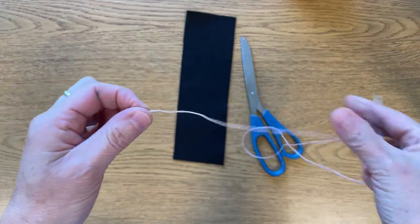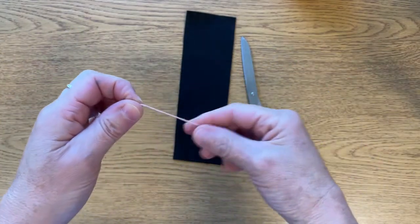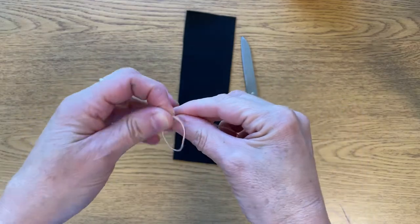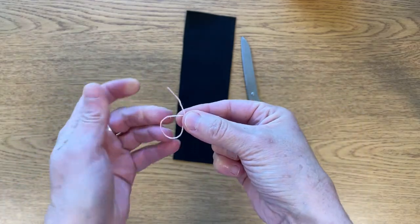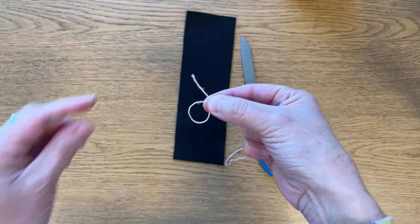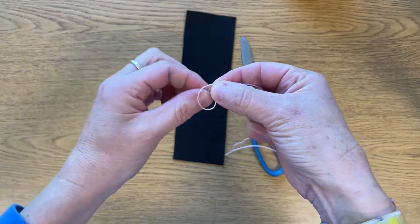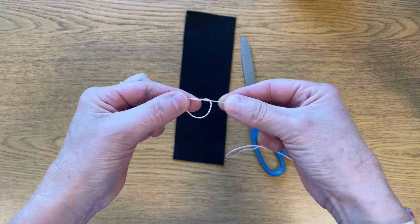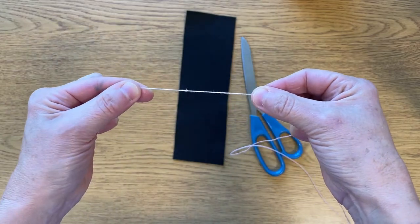On the other end of the thread we're going to make a knot. To create a knot, you make a loop by crossing the short end over the long end, wrapping the end of the thread behind and through the hole, and then pull. Simple.